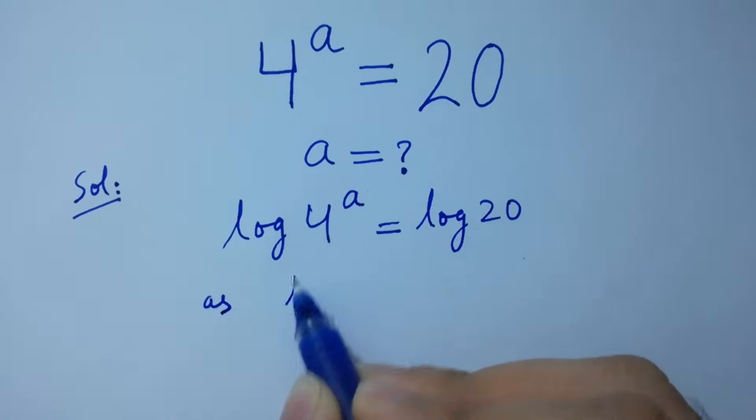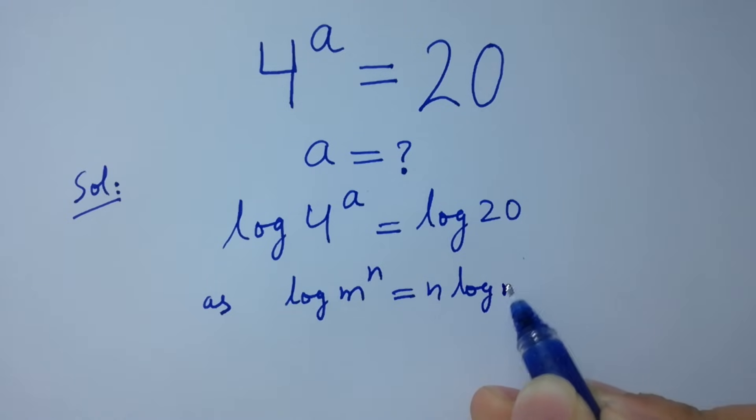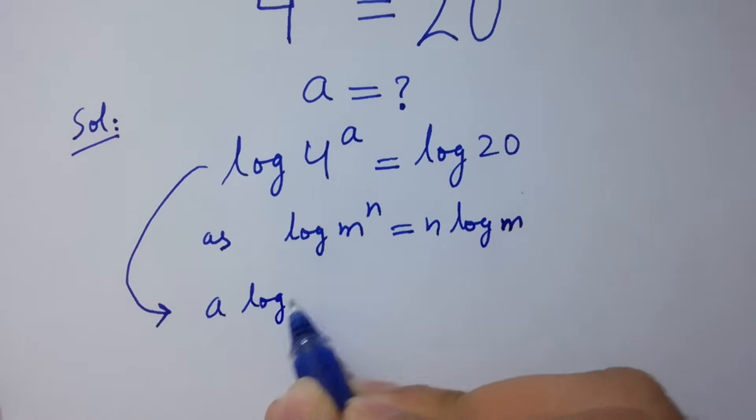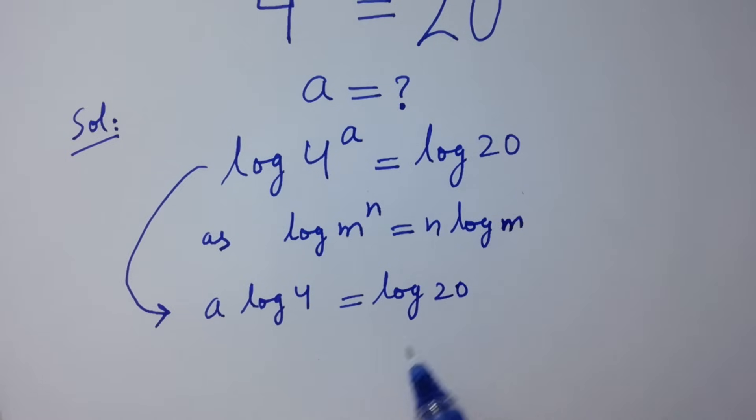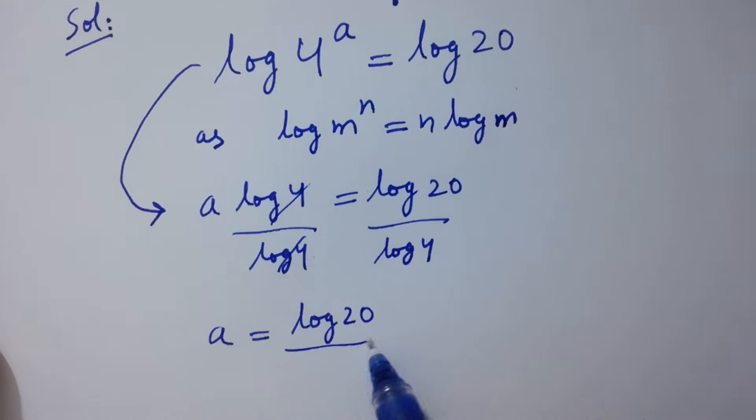As log m to the power n equals n log m, it will be a log 4 equals log 20. Divide by log 4 on both sides, log 4 and log 4 cancels. A equals log 20 over log 4.